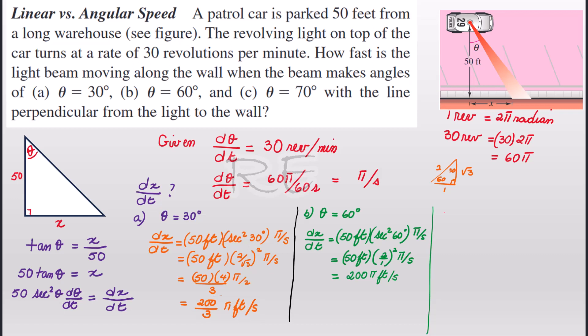Now for C, we need to look for dx/dt for θ equal to 70 degrees. Now, 70 degrees is not a special angle. Therefore, we need to use a calculator. dx/dt will be 50 feet times